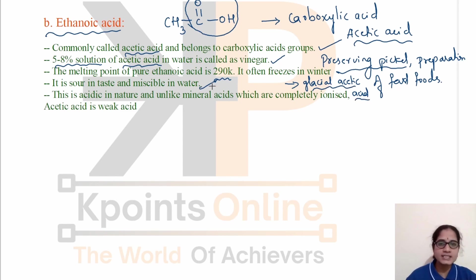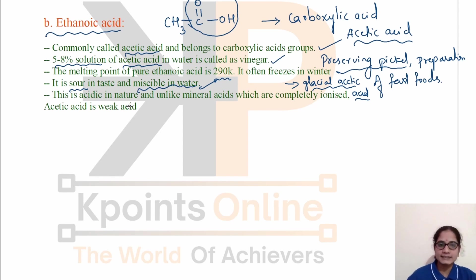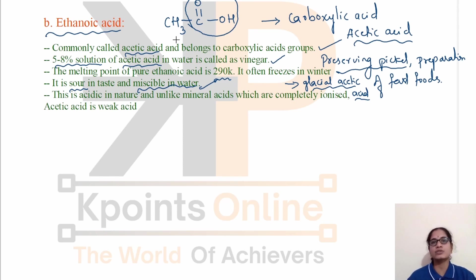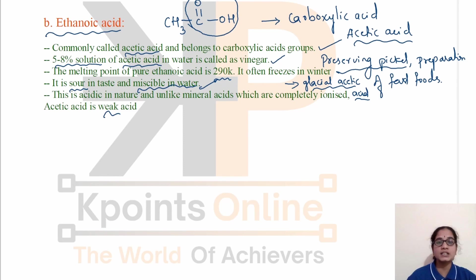Ethanoic acid is sour in taste and acidic in nature, and it is miscible in water. Unlike mineral acids which are completely ionized, acetic acid is a weak acid. Even though it has acidic character and turns blue litmus red, it does not completely ionize to form H⁺ ions. Mineral acids give complete ionization to form H⁺ ions, whereas acetic acid is a weak acid.